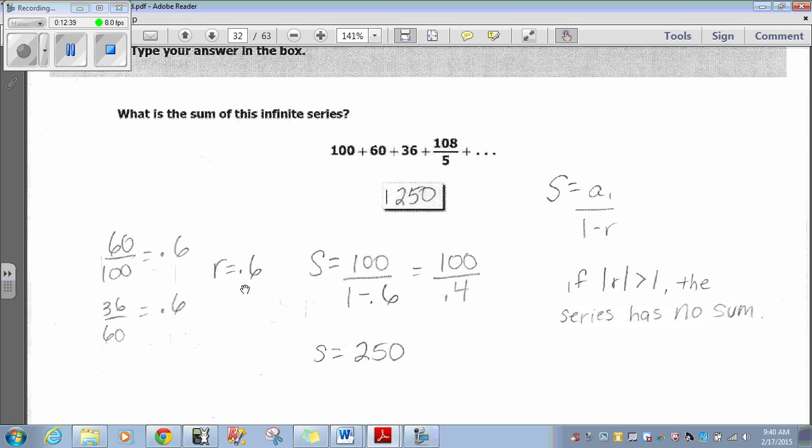We get that. So, now that we have our r, which is 0.6, and it is less than 1, so there is a sum. If it was greater than 1, the series would have no sum. Okay. So, now we apply this formula. Now, s equals a sub 1. A sub 1, our first number is 100, divided by 1 minus r. r is 0.6. So, that works out to be 100 divided by 0.4. If you do 100 divided by 0.4 in your calculator, you get 250. Okay. Again, this is unit 9, and you need to know which formula to use in order to answer this question.